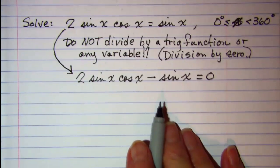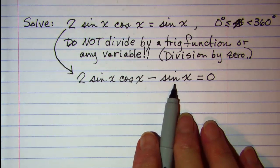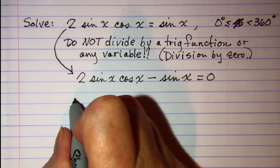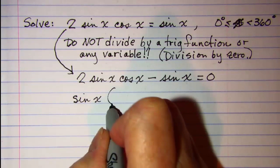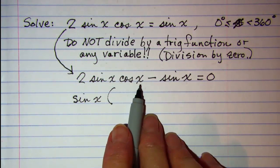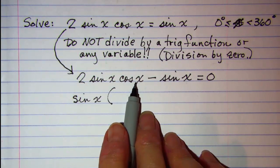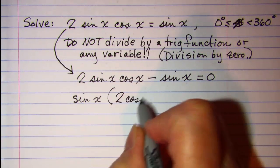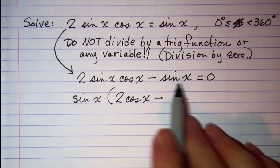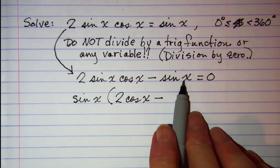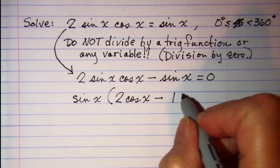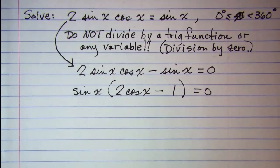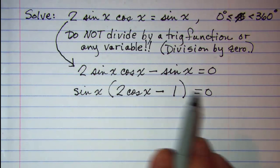Now we can solve by factoring. We have a sine x in this term and in this term. So let's factor out our sine x. From this term when we factor sine x out we still have 2 times cosine x, and then minus, and when we factor sine x out of this term we have to write 1 as the factor that's left.